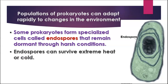Some prokaryotes form specialized cells called endospores that allow them to remain dormant through harsh conditions. This one is probably something like anthrax or botulism. The endospore has the DNA and a small amount of cytoplasm with several layers of thick cell wall, allowing it to survive extreme heat, cold, or dry conditions for a long period of time, then become reactivated when conditions are appropriate for its growth.